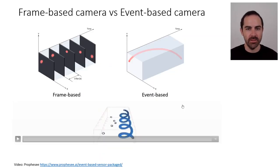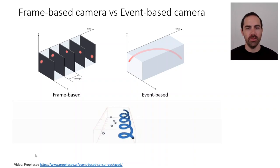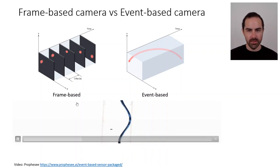This is an animation by company Prophesee where they show on the left, top left, we have the frame-based principle. On the top right we have the event-based principle, and on the bottom we see an animation trying to compare both. So the event-based is shown with blue and black, which I think are the two polarities.